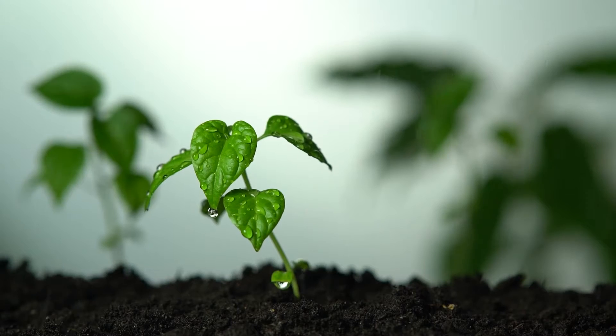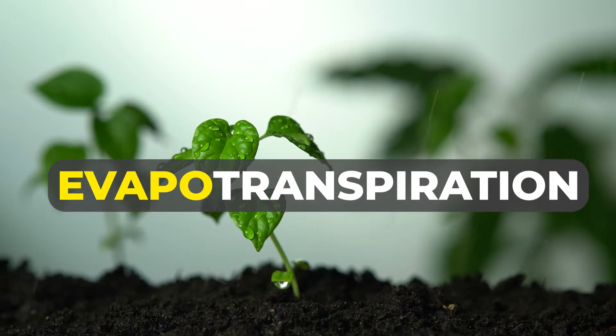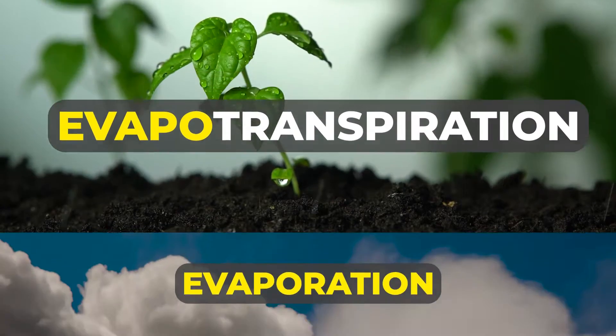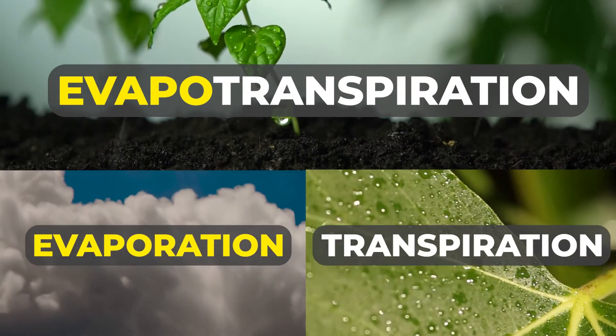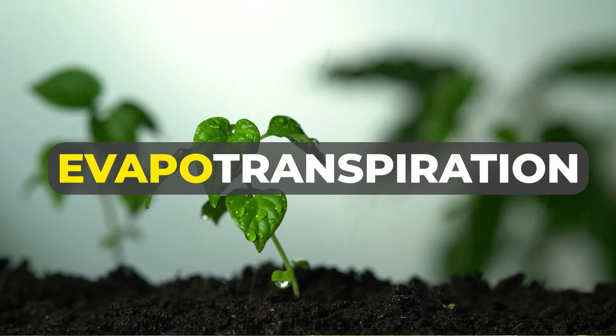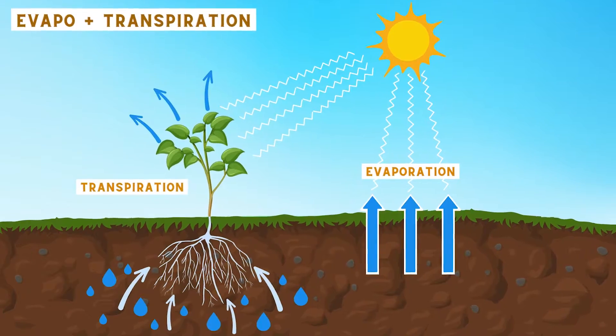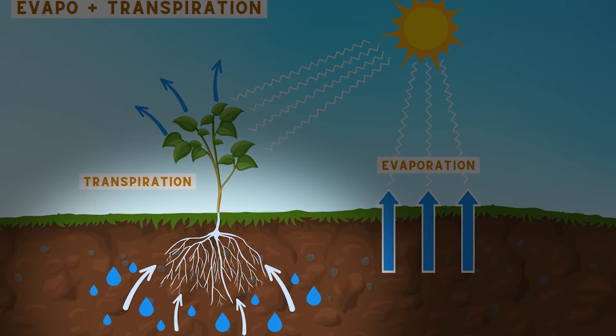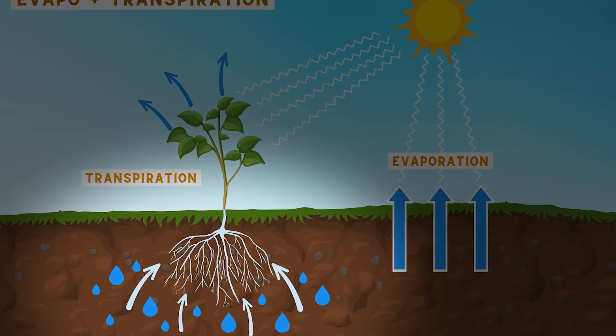Evapotranspiration is the combination of two words: evaporation and transpiration. You put those two terms together and you get evapotranspiration. Transpiration is the process by which plants consume water. When a plant drinks water and pulls it up from the soil, that is when the plant is transpiring — it's the movement of water from the soil up through the roots, into the plant, and out through the leaves.